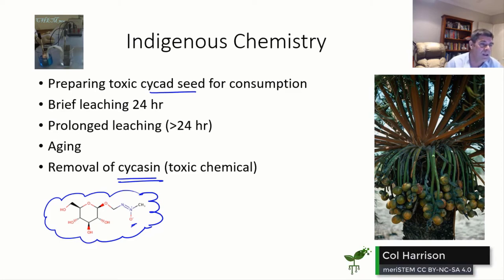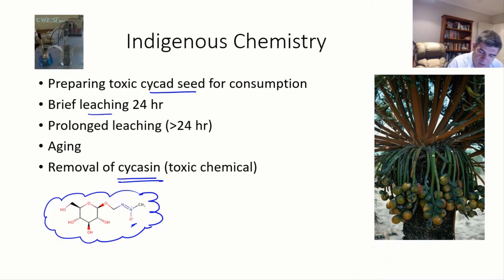Two main ways in which we can reduce the toxicity of cycad seeds is through periods of leaching. In papers that are written about the Aboriginal methods for doing this, there's basically a separation based on time: brief leaching defined as anything up to a 24 hour period and prolonged leaching beyond that.